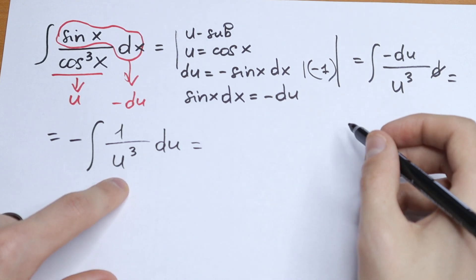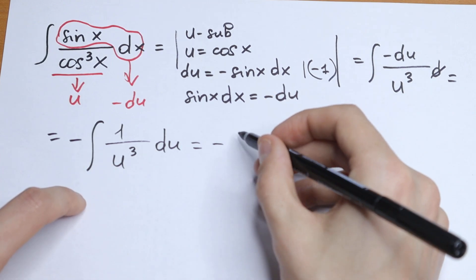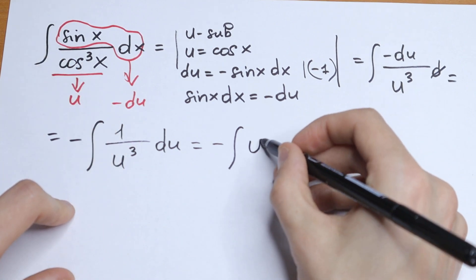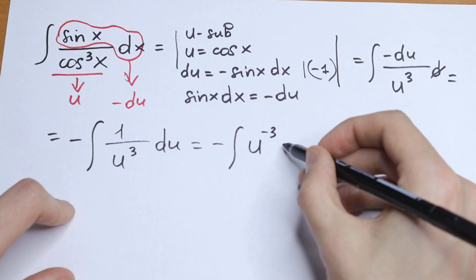So how can we integrate this? This will be equal to minus integral. And this u to the third power I write in our numerator. So it will be u to the power minus 3 du.